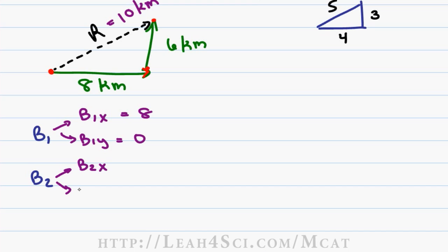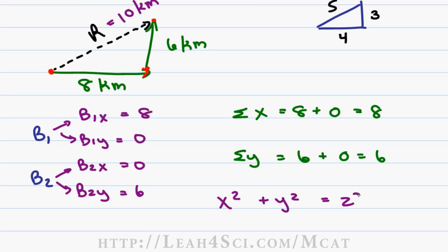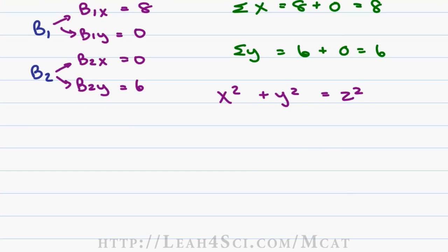The second leg of the journey is only in the y direction so B2x equals 0, B2y equals 6. So the sum of x equals 8 plus 0 which is 8. The sum of y equals 6 plus 0 which equals 6 and the resultant comes from the formula x squared plus y squared equals z squared or resultant squared.